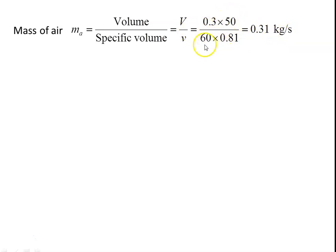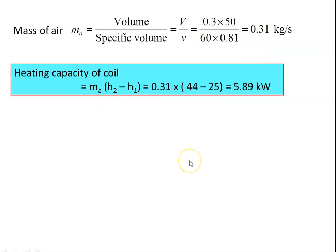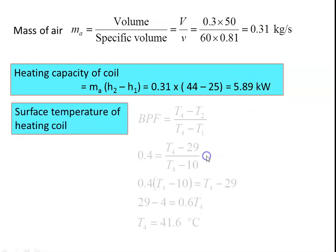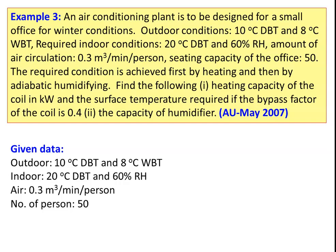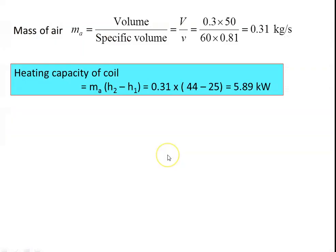Volume is 0.3 m³/min per person, multiplied by 50 persons, divided by 60 (to convert to seconds), divided by specific volume 0.81, giving 0.31 kg/s. Heating capacity of the coil = M × (H2 − H1) = 0.31 × (44 − 25) = 5.89 kW. The bypass factor is given as 0.4.